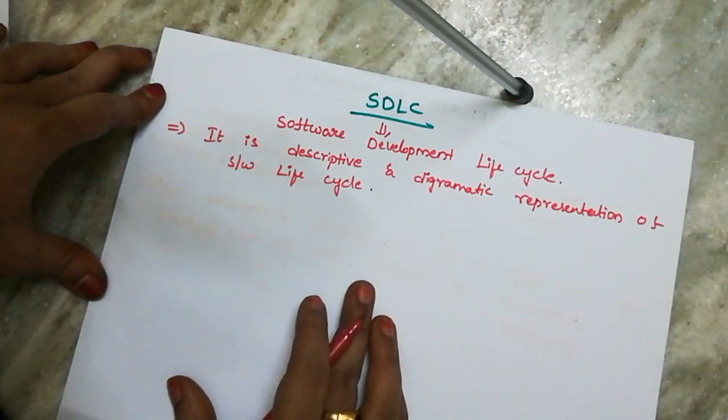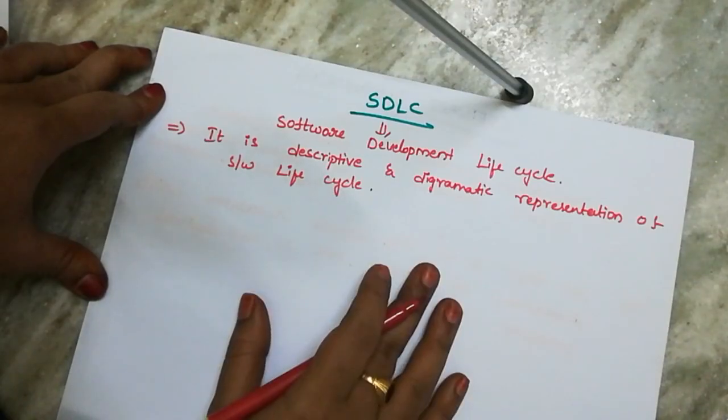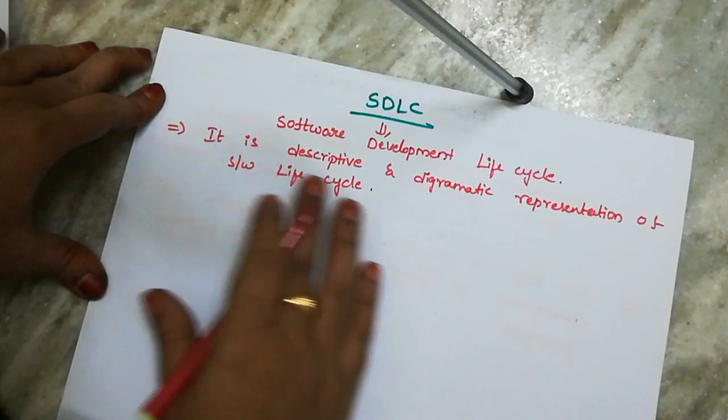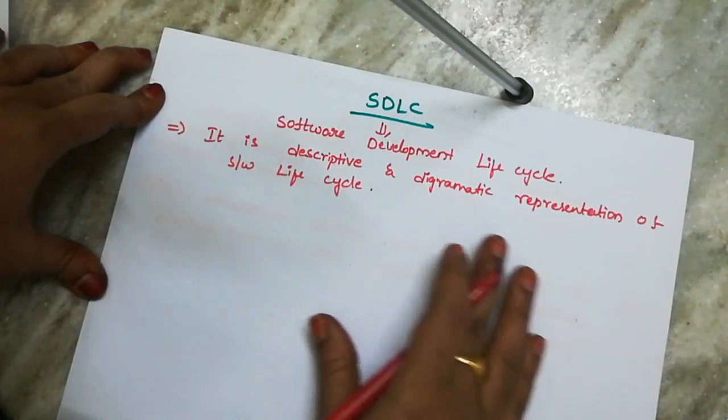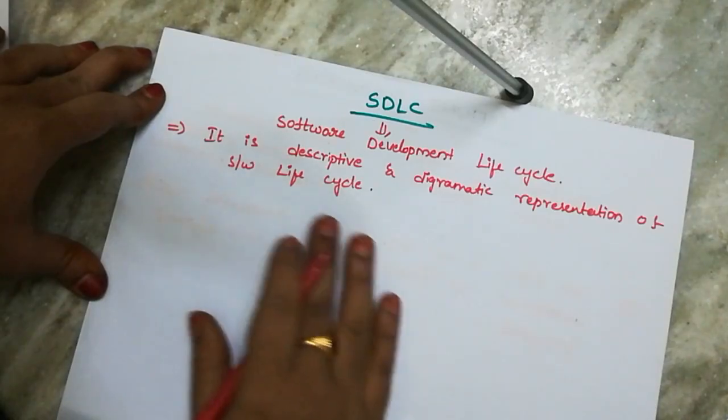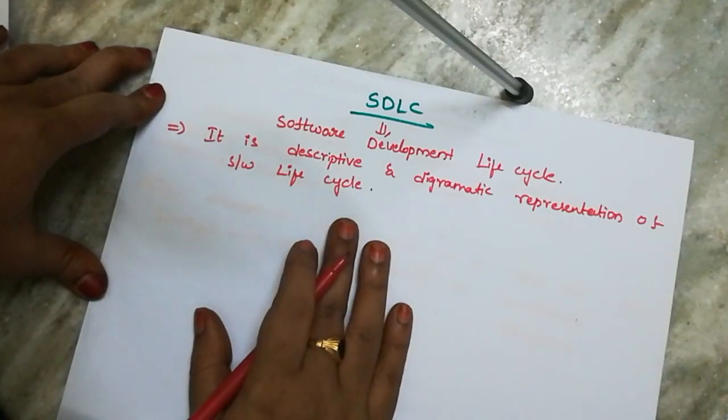So the main definition of SDLC: it is a descriptive and diagrammatical representation of the software life cycle.